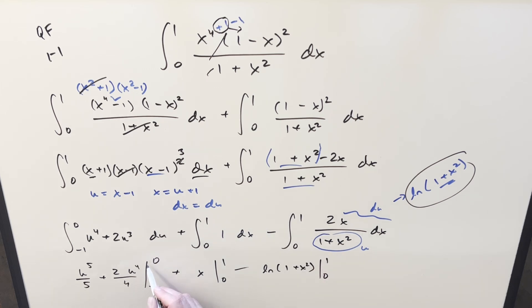Now plugging everything in you plug in a zero that's all zero. Then plugging in minus one we have another minus one we evaluate so plugging in minus one here we have minus one fifth times minus one is positive one fifth. Here we just have two over four or one half distributing a minus sign we have minus one half. Evaluating x from zero to one that's just going to be a plus one. Here we have plugging in one minus natural log of two plus natural log one plus zero that's just natural log of one. Natural log of one is just zero so that's going away.